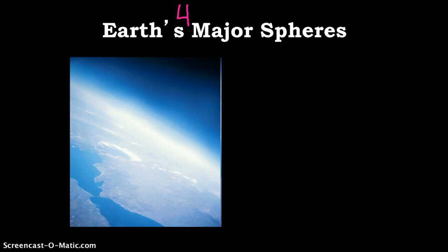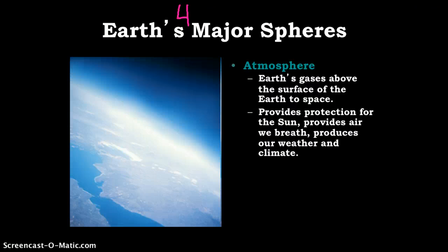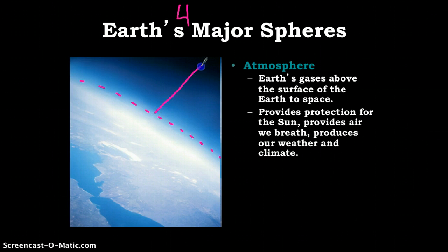The first one that we're going to talk about is the atmosphere. The atmosphere is all the gases that are above Earth's surface. So we're actually looking at a picture of the atmosphere on the edge of the Earth. So here is the edge of the clouds. The atmosphere goes up out into space. You can see the change in color.